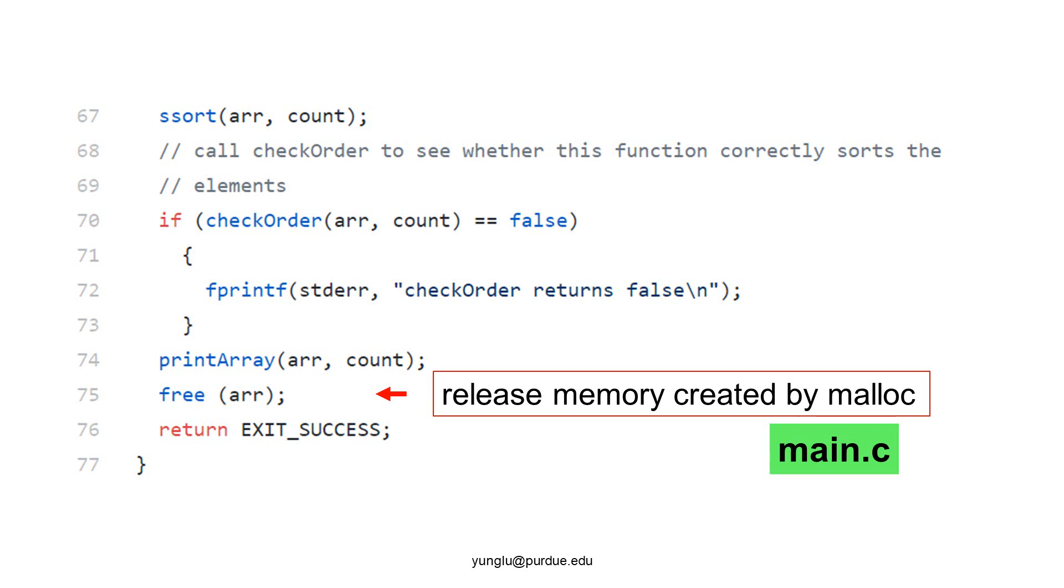If the array is not correctly sorted, the program prints an error message. Line 74 prints the array and line 75 releases the memory allocated earlier by malloc.